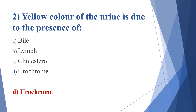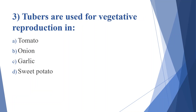Third question: tubers are used for vegetative reproduction in. Option A: tomato. Option B: onion. Option C: garlic. Option D: sweet potato. Answer is option D, sweet potato.